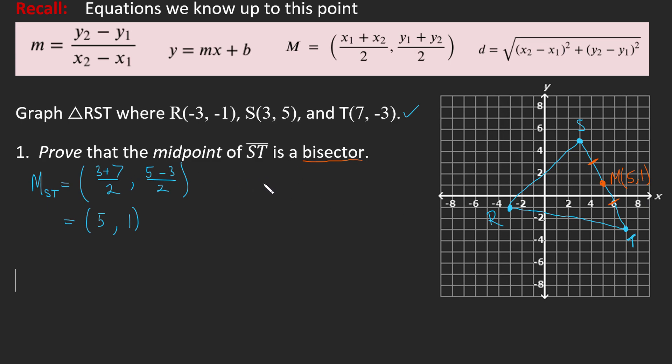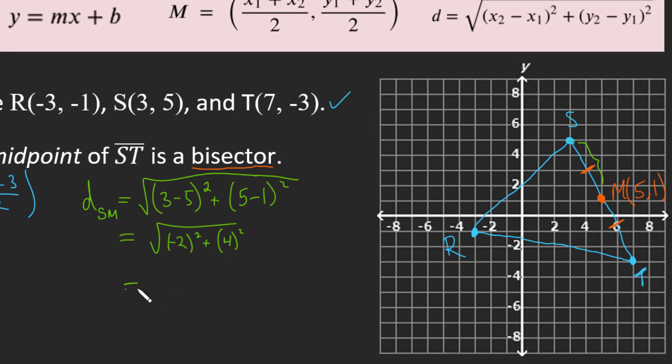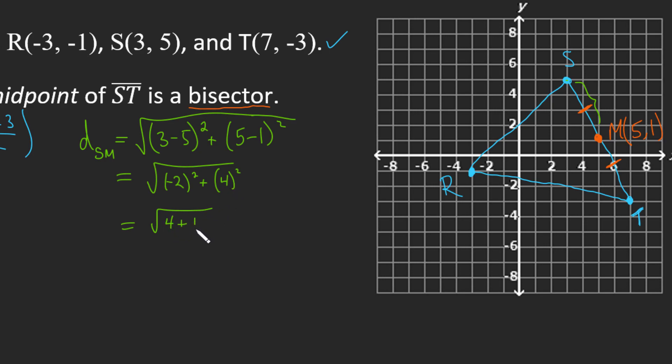Now we need to prove that it's a bisector. What I'm going to do is get the length of one side, the side right here, which would be SM. So the distance from S to M, we're going to employ the distance equation. We're going to subtract our X values, so 3 take away 5, we'll square that. We are now going to find the delta of the Y values, so 5 take away 1, and we'll square that. That gives us negative 2 squared and 4 squared, which is the square root of 4 plus 16, which is the square root of 20.